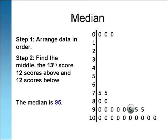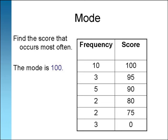The median is the center score so the scores must be arranged in order. In our example of 25 scores the data splits around 95 with 12 scores above and 12 scores below, so 95 is the median. The mode is the score that occurs most often. Frequency is the number of times a score occurs. In this example there are 10 100s so 100 is the mode.